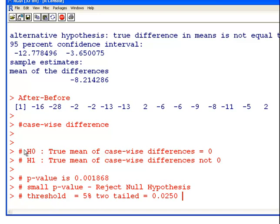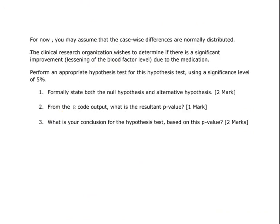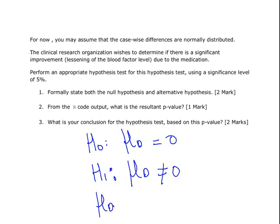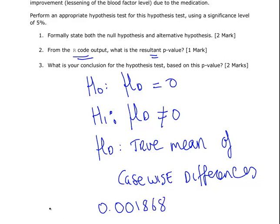Now let's actually look at the questions that I have asked. Formally state both the null hypothesis and alternative hypothesis. What we have there so far is okay. What you could have also done is mathematically write it out like this: H0 mu of D, where D is the case-wise difference, equals zero. H1 mu of D not equal to zero. Mu of D is the true mean of case-wise differences in blood factor level. The p-value is 0.001868, and the conclusion is reject.